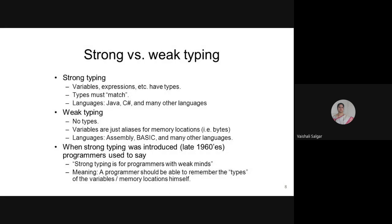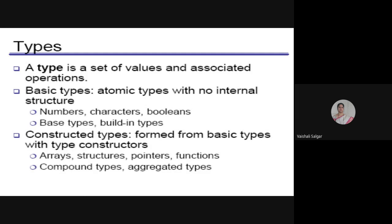Strong typing was introduced in the late 1960s. Programmers used to say 'strong typing is for programmers with weak minds' — meaning the programmer should be able to remember the type of variables and memory locations themselves, without the program doing it. However, when a user has many variables in a program, it becomes very difficult to keep track of all memory locations, which is the disadvantage of this approach.